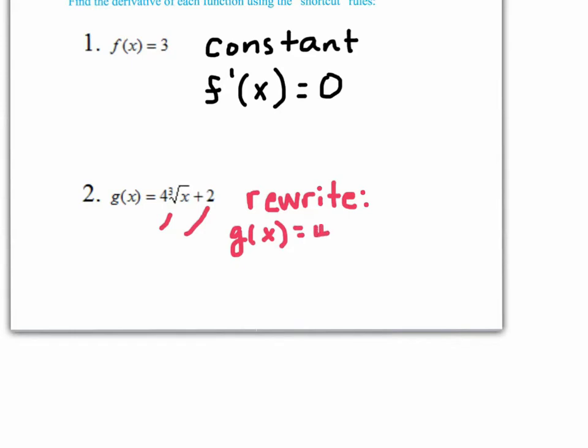So 4x to the 1 third power plus 2 is the rewrite of g of x. 4x to the 1 third was the place that, or the piece that we really needed to work with.